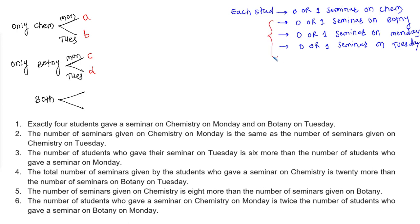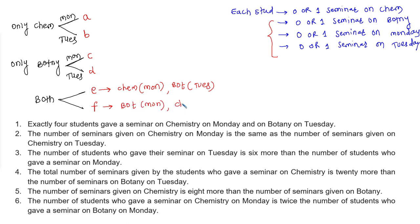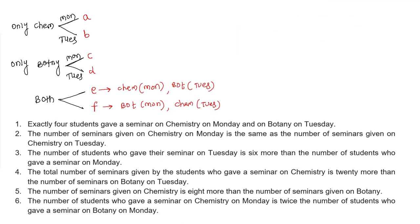There is no student who gave both seminars on the same day — a student can give at most one seminar per day. For students who gave seminars on both subjects: E students gave chemistry on Monday and botany on Tuesday; F students gave botany on Monday and chemistry on Tuesday.